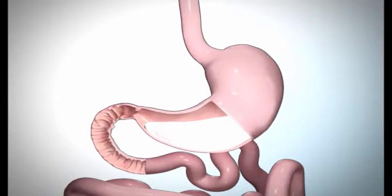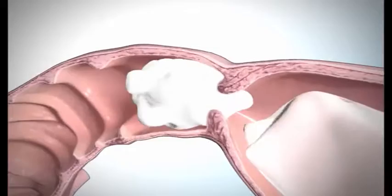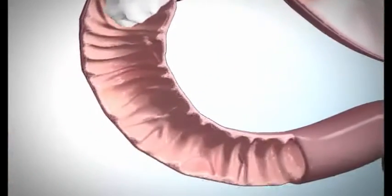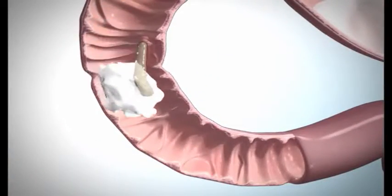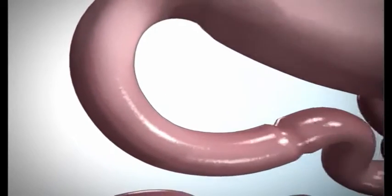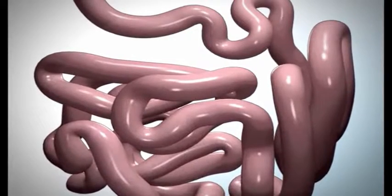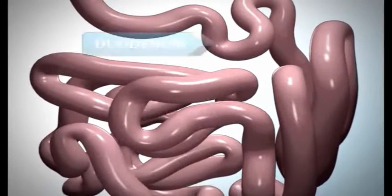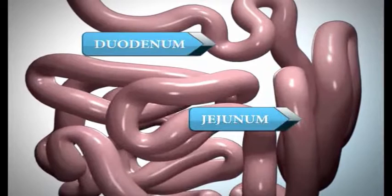Once broken down, the small particles are slowly released into the first part of your small intestine, the duodenum, by a muscle called the pyloric valve. The pyloric valve is a ring of muscle between your stomach and your duodenum. Most of the nutrients from the broken-down food are absorbed in the duodenum and the jejunum, which is the second part of the small intestine.